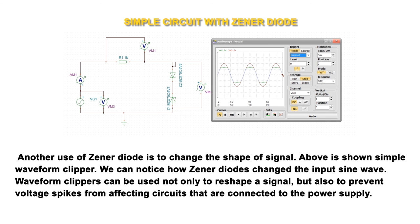Another use of Zener diode is to change the shape of signal. Above is shown simple waveform clipper. We can notice how Zener diodes change the input sine wave. Waveform clippers can be used not only to reshape a signal, but also to prevent voltage spikes from affecting circuits that are connected to the power supply.